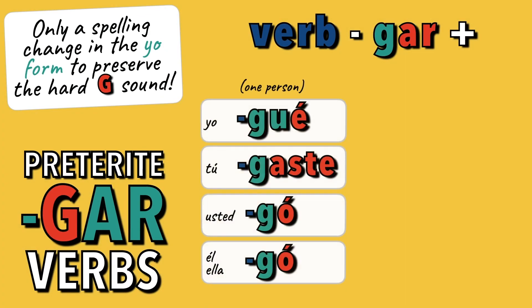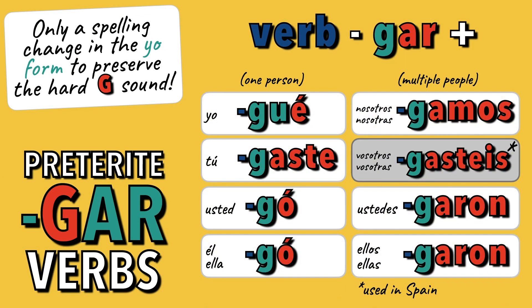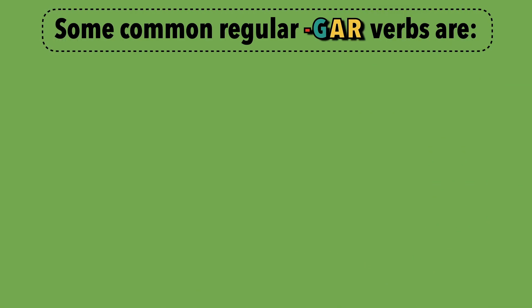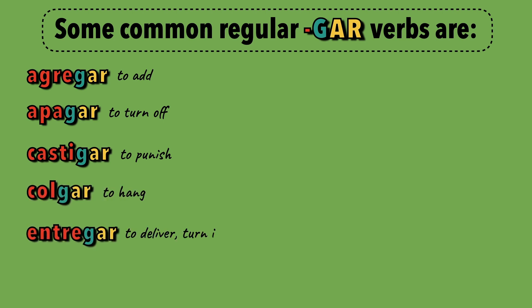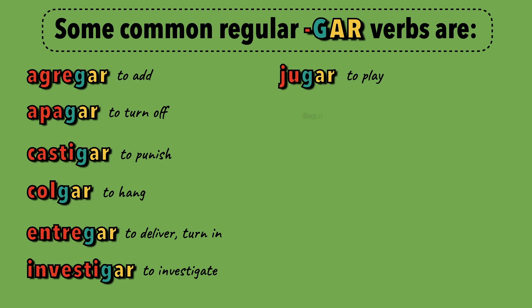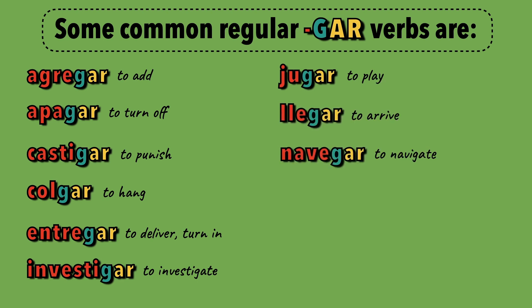Once more, this is how we change verbs ending in G-A-R in the preterite in Spanish. Here are some common verbs that will follow the formula in this video: agregar, apagar, castigar, colgar, entregar, investigar, jugar, llegar, navegar, negar, pagar, pegar.